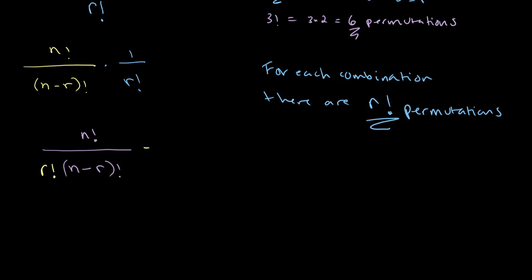And this over here is our equation for combinations, or NCR. And once again, this can be read as N choose R.